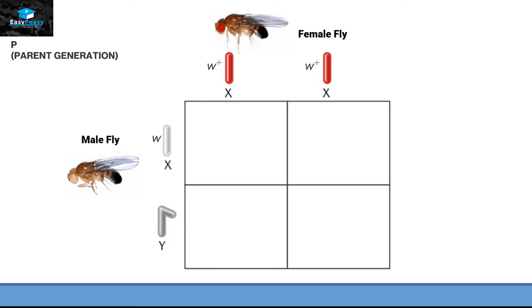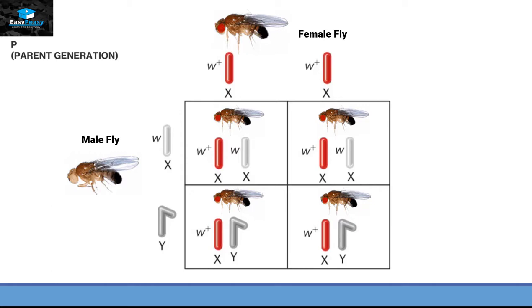Male fly, as it has white eyes, it will have X and Y chromosomes. But the gene present on X chromosome is just W not W+, showing that this is the recessive gene. Now by this mating, all the organisms that can be produced by this result have red eye color.